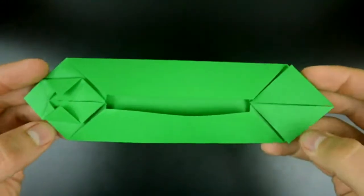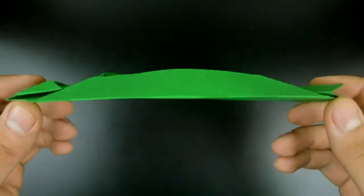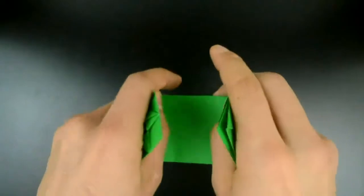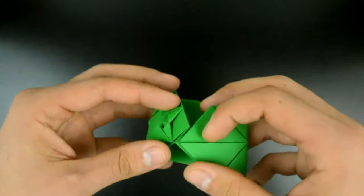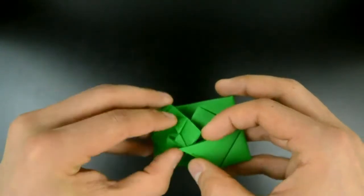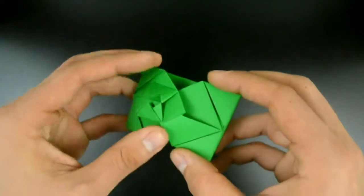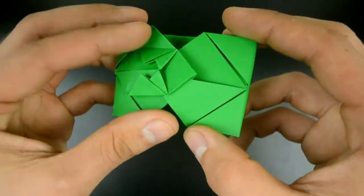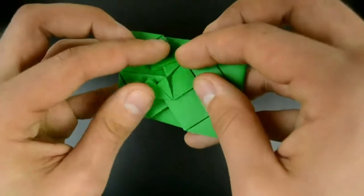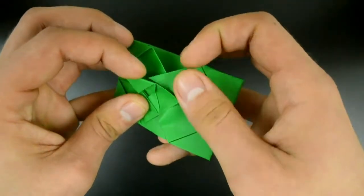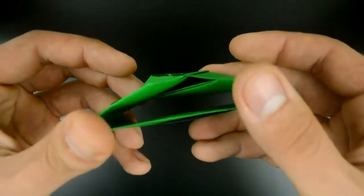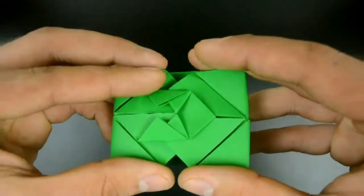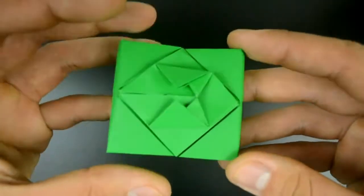Now for the next step, turn the paper over. Carefully bring one side to the other and fit the tips on these little pockets here. Now slide the paper until the end, until the limit. And that's the result.